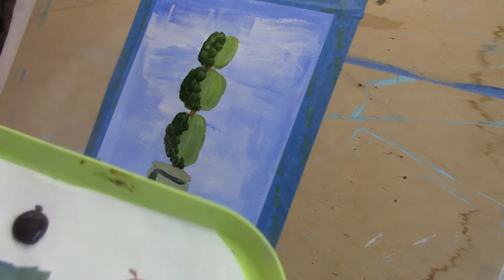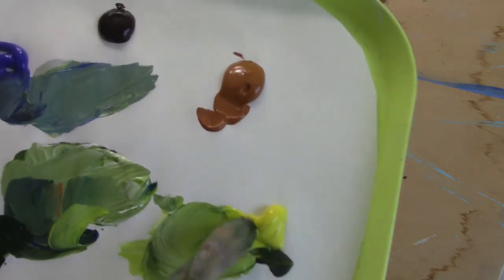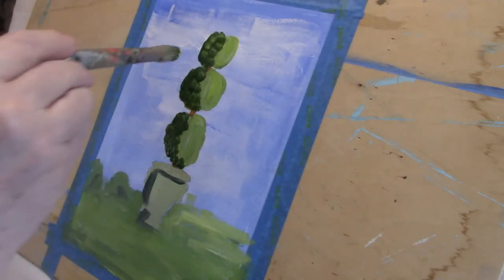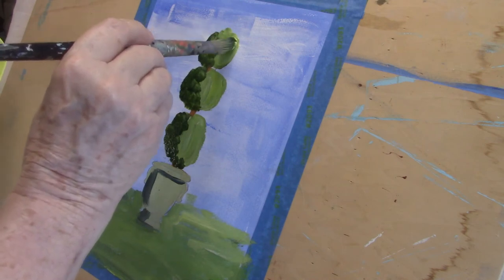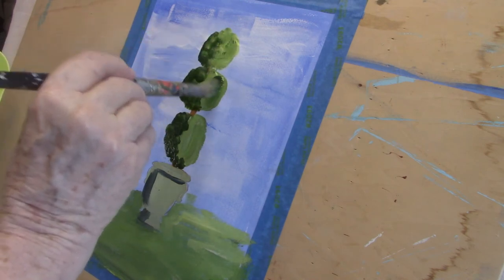I'll add some primary yellow to this color and then put that on the opposite side, where I think the light will be hitting.